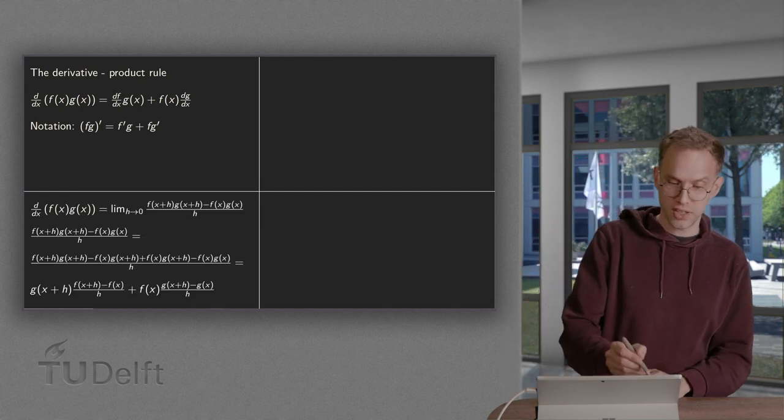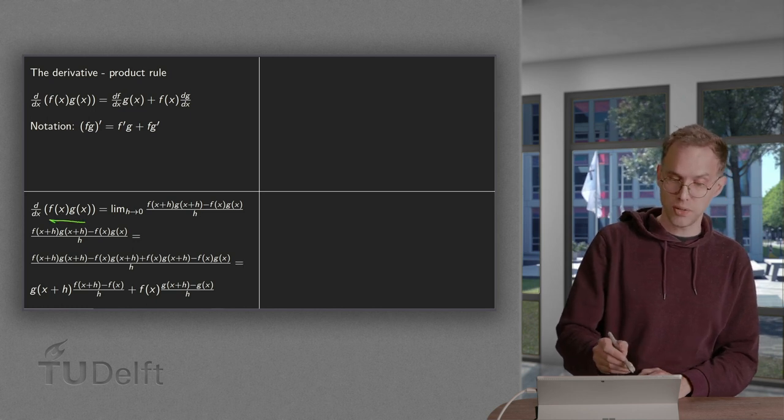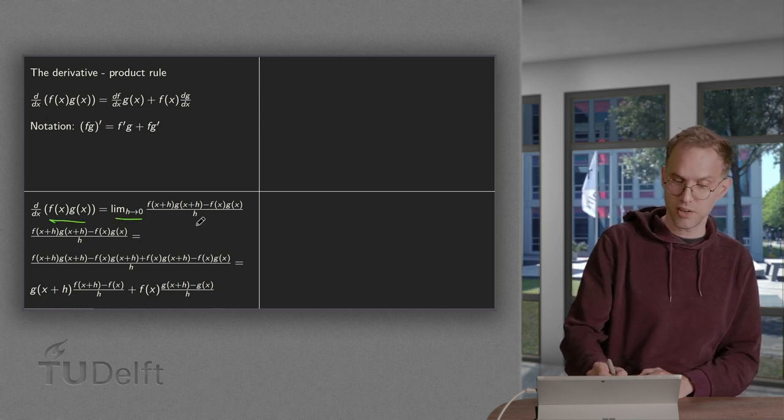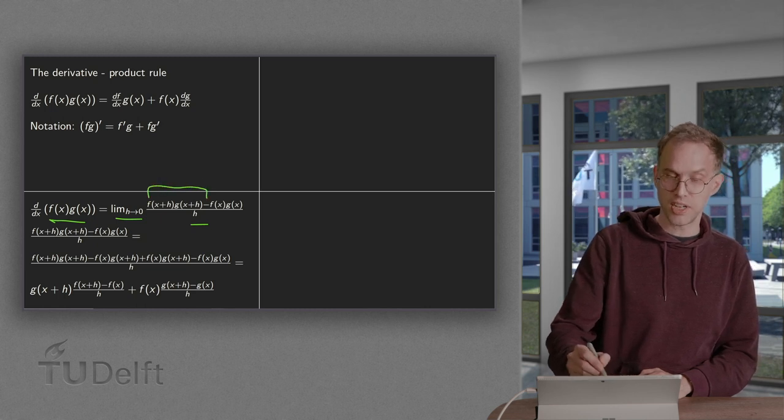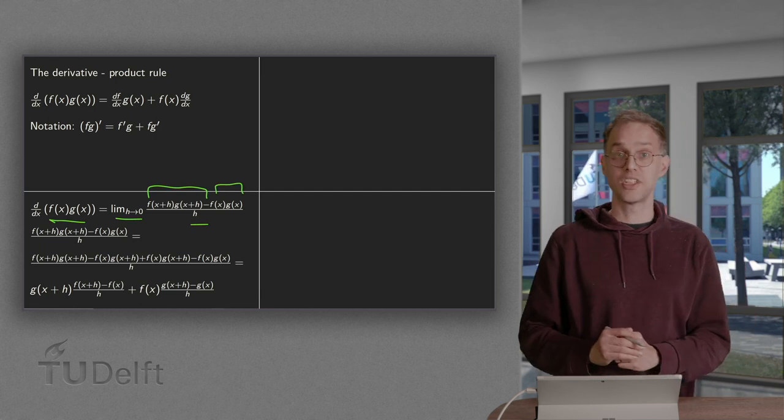So we use the definition, the d/dx of f times g. What do we need to do? We have a limit h to 0 and divide by h of f times g at x plus h minus f times g at x.